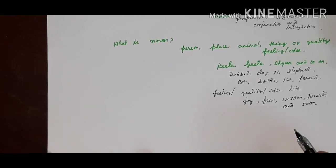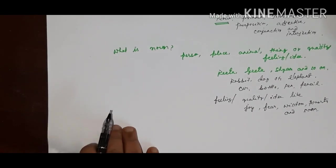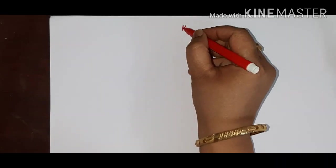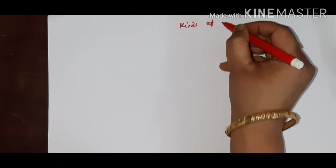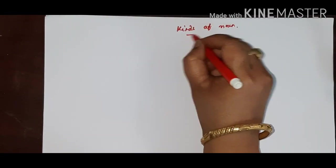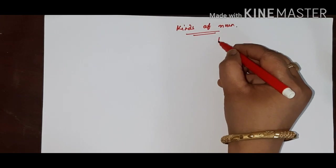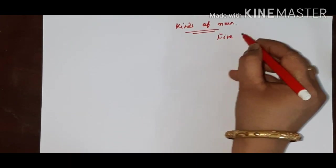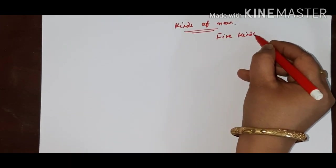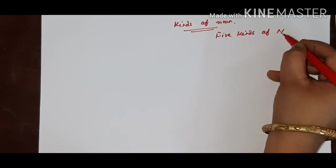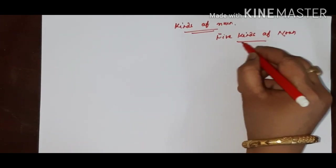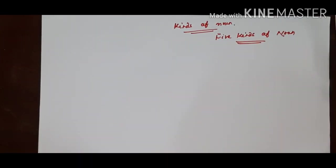There are different parts of noun. Nouns are divided into five kinds. Five kinds of nouns.